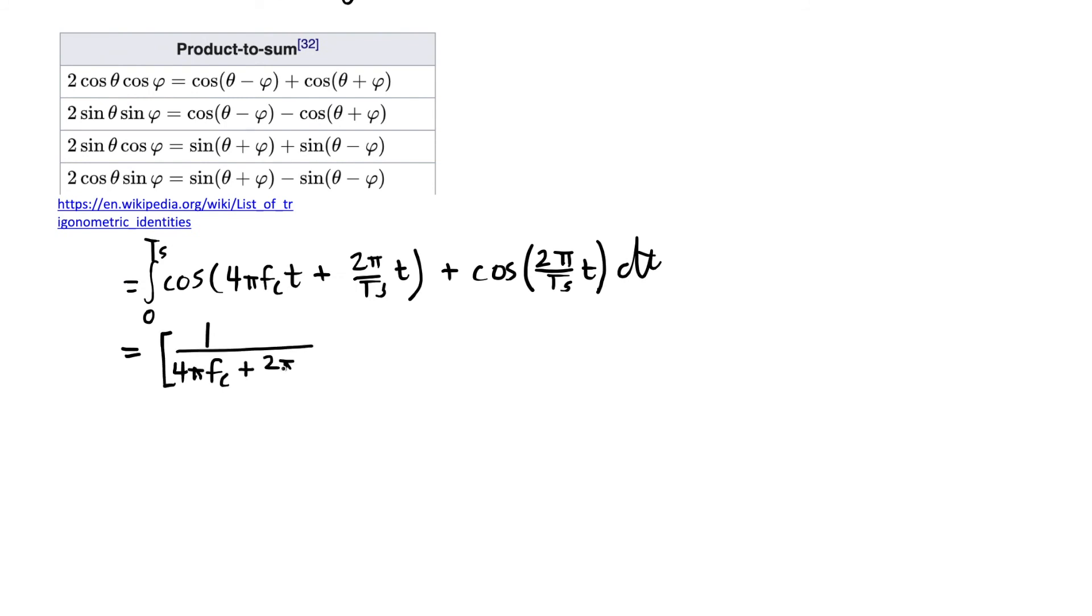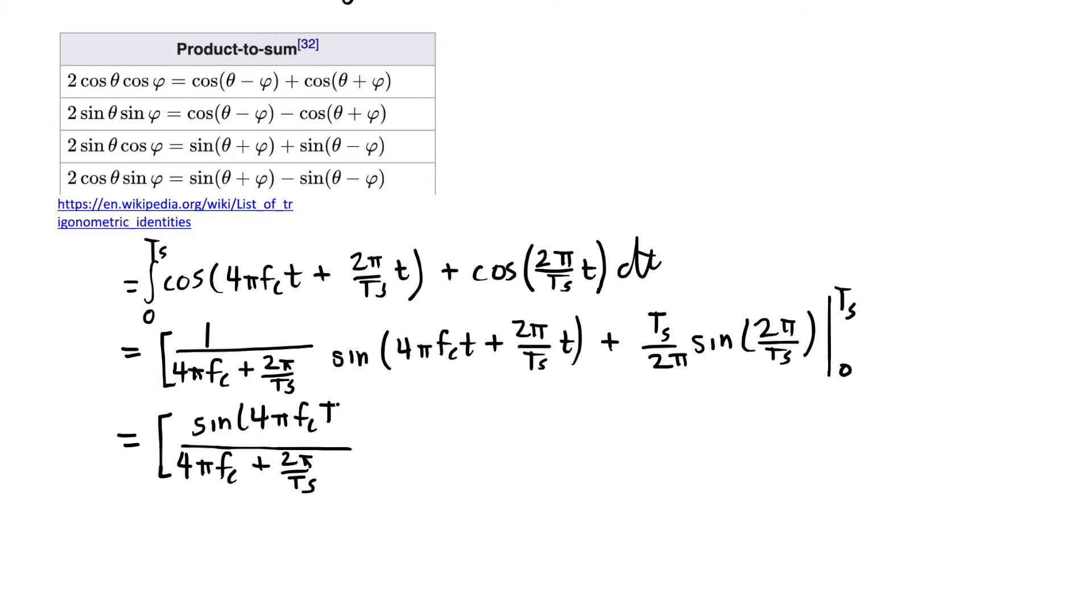When I take the integral of the cosine, I get a sine divided by the constant multiplying the t, the variable t. And now we have to apply the limits, making little t equal to capital T sub s and 0. And I'll do each term separately. So the first term is going to have this 4 pi constant on the bottom. We have a sine of 4 pi fc t sub s plus 2 pi. Because that t here is going to cancel out the t sub s at the bottom when I plug in t sub s. And then on the other side, when I have a 0, it's just going to be sine of 0, which is 0.